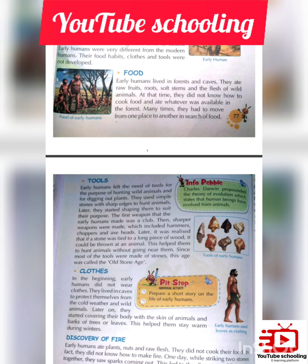Before ancient times, people lived in caves, in the woods, in the forest, in the jungle. They ate raw fruits, roots, soft stems and the flesh of wild animals. At that time they did not know how to cook food and ate whatever was available in the forest. They had to move from one place to another in search of food.